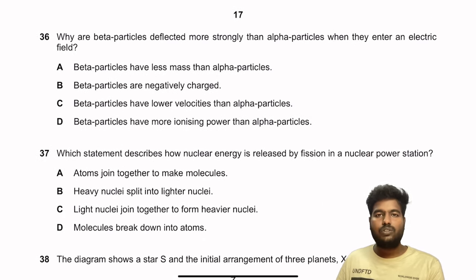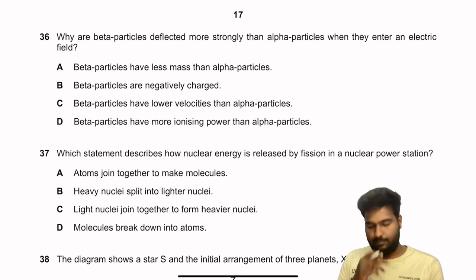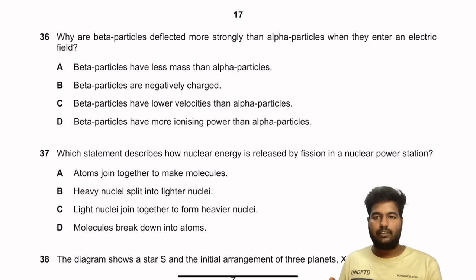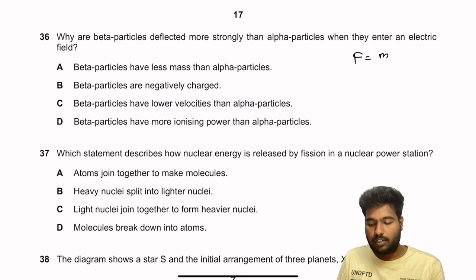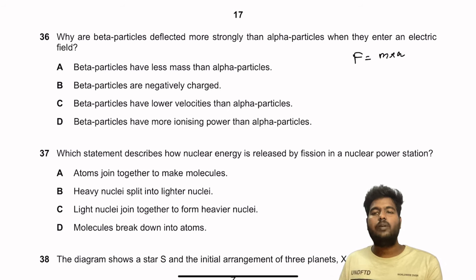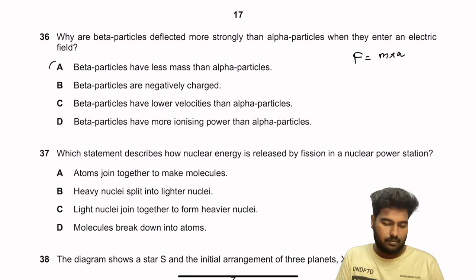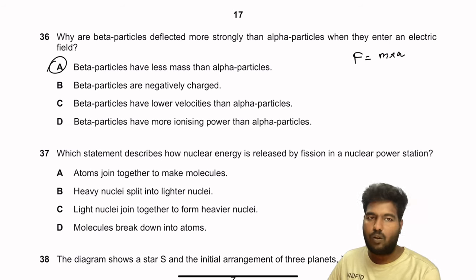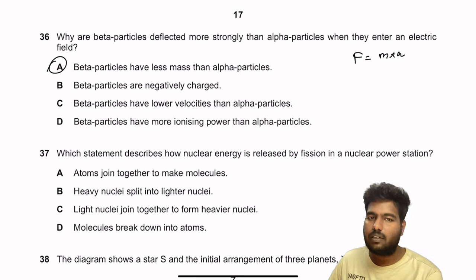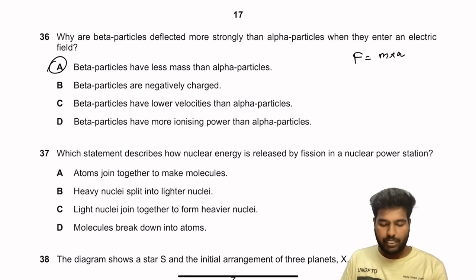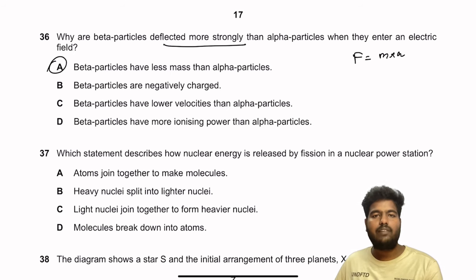Question 36: Why are beta particles deflected more strongly than alpha particles in an electric field? When a charged particle enters an electric field, it experiences a Coulomb force. Using F = ma, for the same force, a smaller mass gives greater acceleration and therefore greater deflection. Beta particles have much less mass than alpha particles — that is the reason. The first option is the right answer.